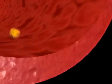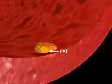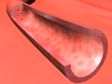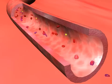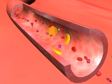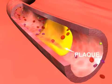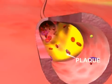Over time, the inside of these arteries develop fibro-fatty plaques of different sizes. These plaques are made of cholesterol and other substances floating through the bloodstream, such as inflammatory cells, proteins, and calcium. Many of the plaque deposits are hard on the outside and soft on the inside.